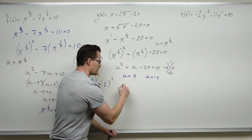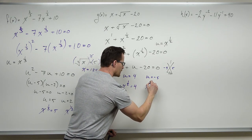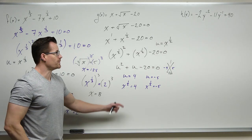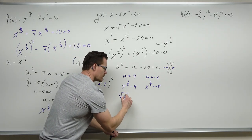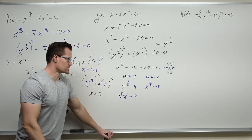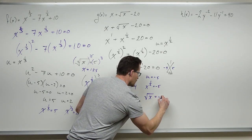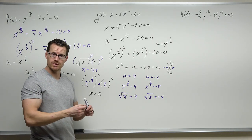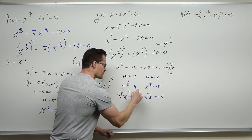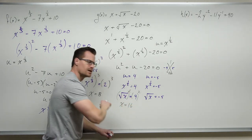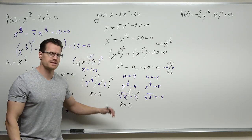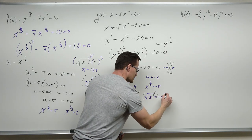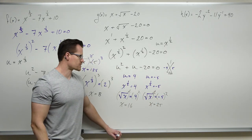Since u equals x to the one-half — which is the square root of x — we get: square root of x equals 4, and square root of x equals negative 5. To undo a square root, we raise both sides to the second power. For square root of x equals 4: squaring both sides gives x equals 16. That's a valid x-intercept. For square root of x equals negative 5: squaring gives x equals 25, but this is based on a false premise — a square root cannot equal a negative number over real numbers.